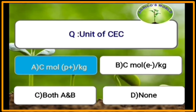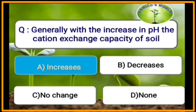The unit of cation exchange capacity is centimoles per kg. Generally, with an increase in pH, the cation exchange capacity of soil increases. Soil having a large amount of organic matter exhibits more cation exchange capacity.